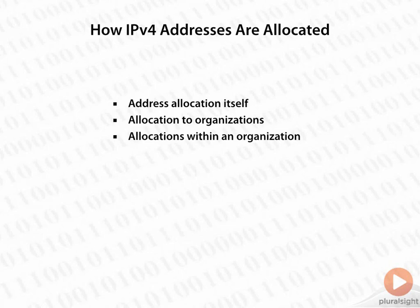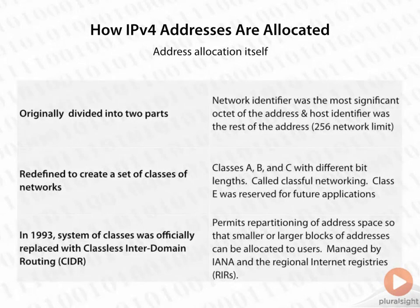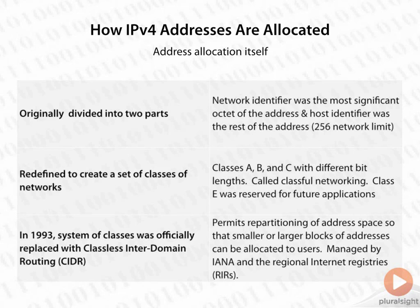Let's begin with the address allocation itself. Originally, addresses were divided into two parts: the network identifier — the most significant octet of the address — and the host identifier, which was whatever the rest of the address was. Looking at the class A address space, that first octet — the first eight bits — would give us a 256 network limit.